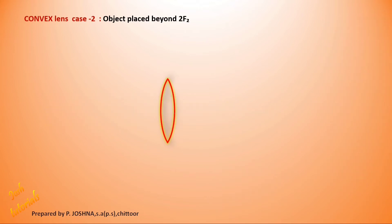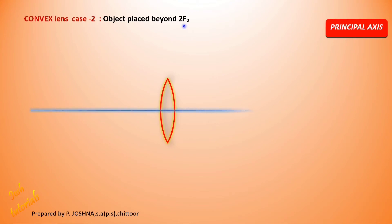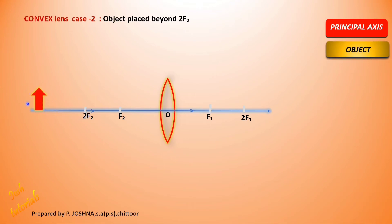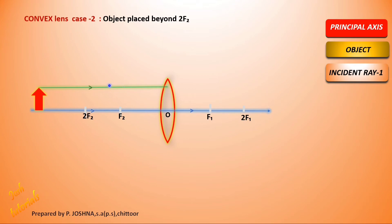Case 2: Object is placed just beyond 2F2, the center of curvature. Draw the principal axis and mark the even points. Place the object (shown as an arrow) just beyond 2F2. The first incident ray is parallel to the principal axis, so the refracted ray passes through F1.